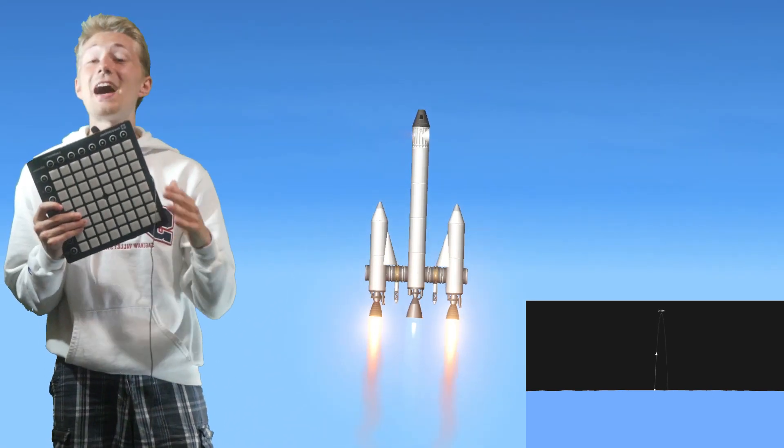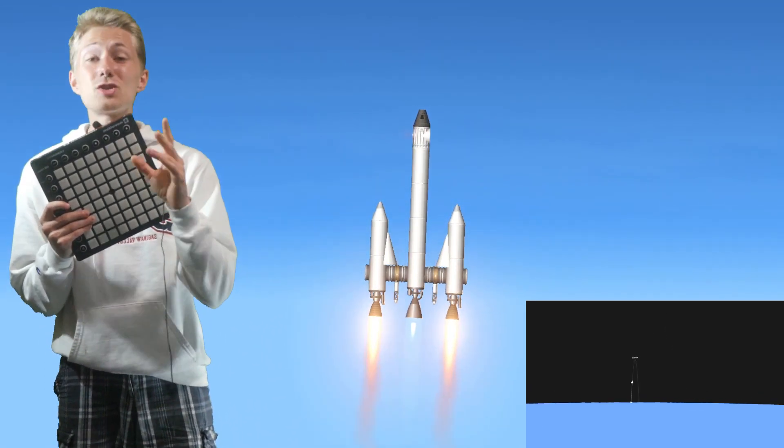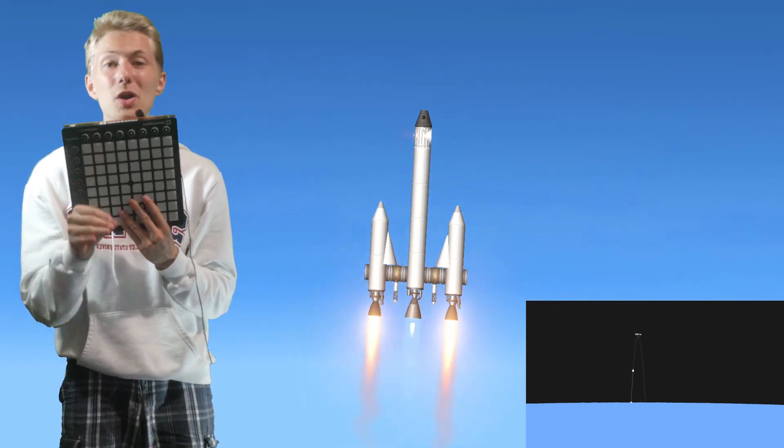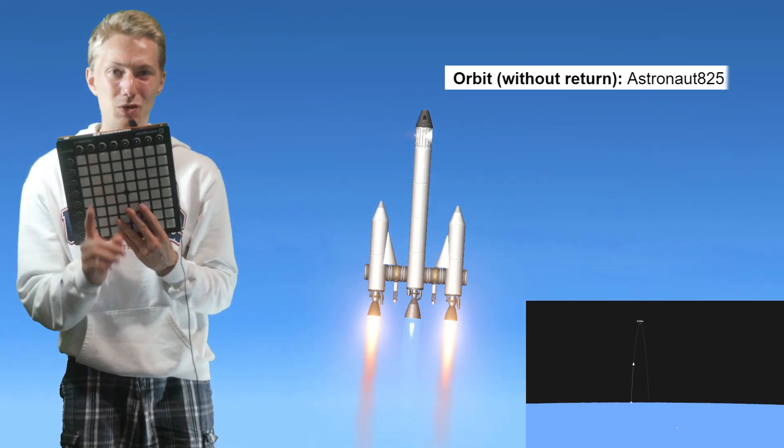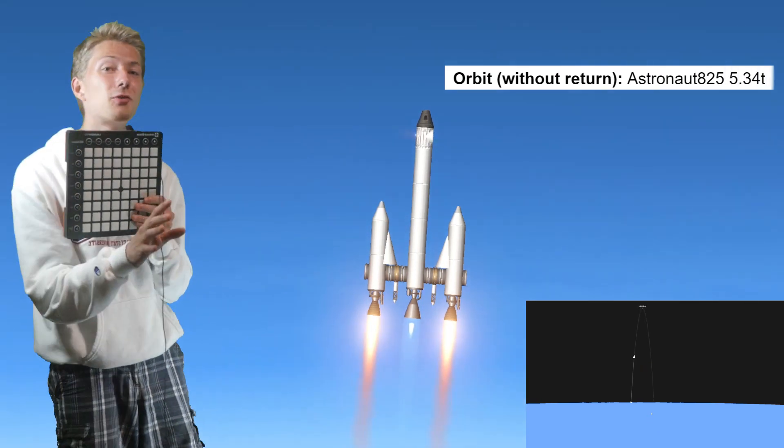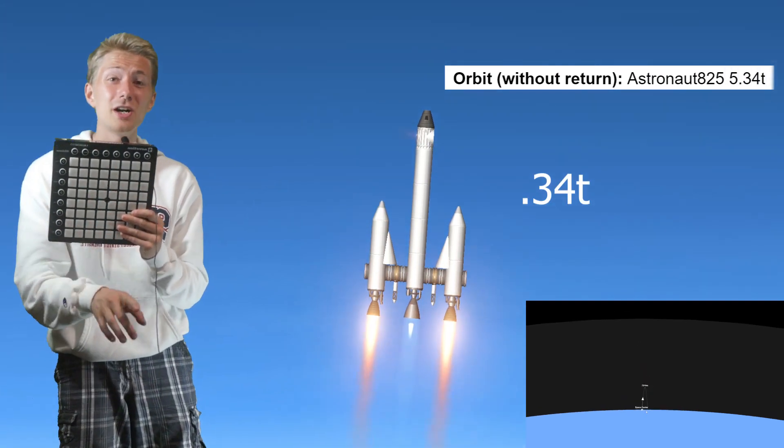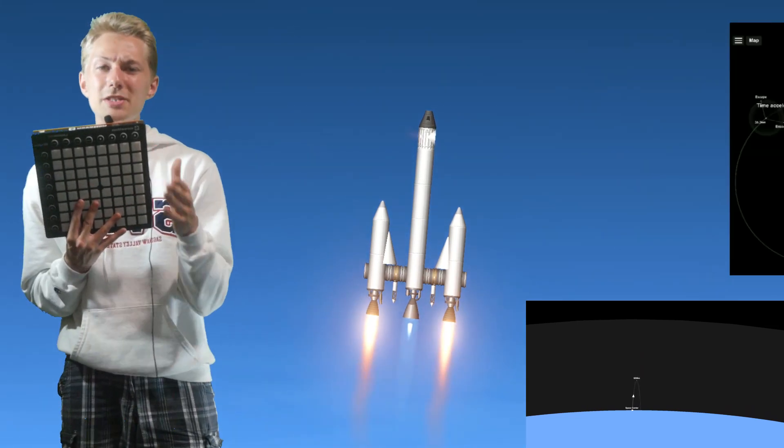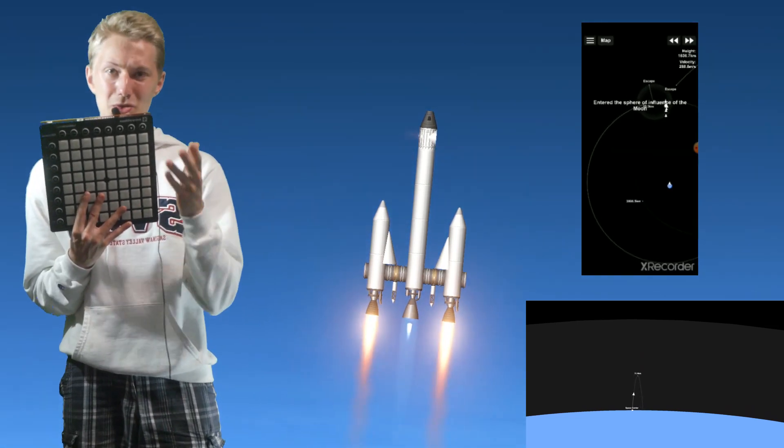Now the first thing to know is that this is not the first time someone's done this. The actual first time was when astronaut 825 shattered the world record for the lightest rocket to get to orbit, which comes in at 5.34 tons, which is 0.34 tons more than the mass of this fuel tank. His method used the gravitational pull of the moon to get to orbit.